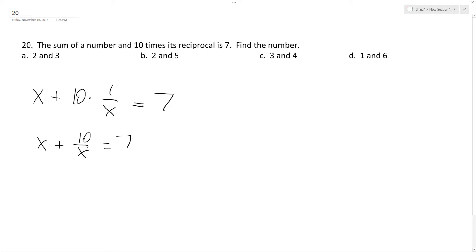Common denominator here, just x, so x squared plus 10 equals 7x. Get everything on the same side, so x squared minus 7x plus 10 equals 0.